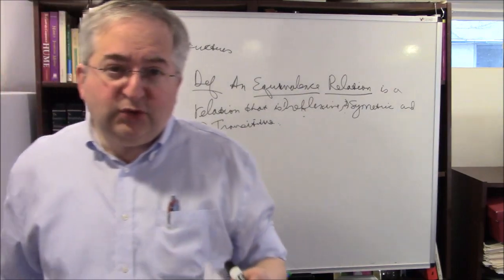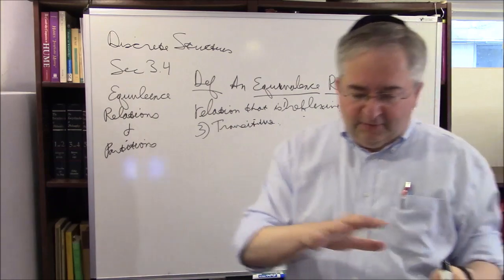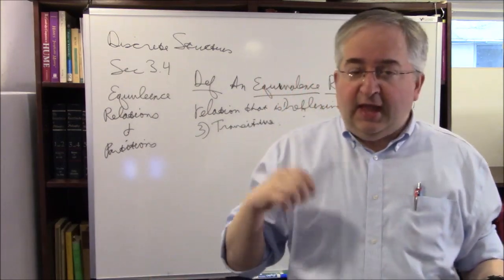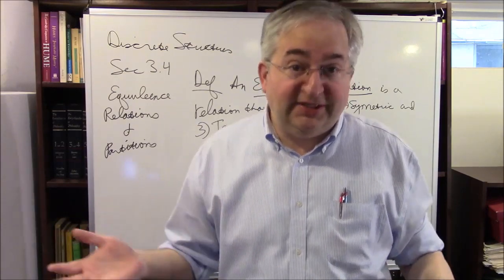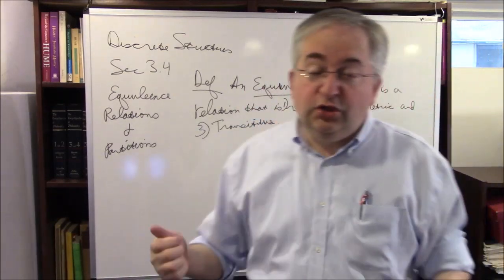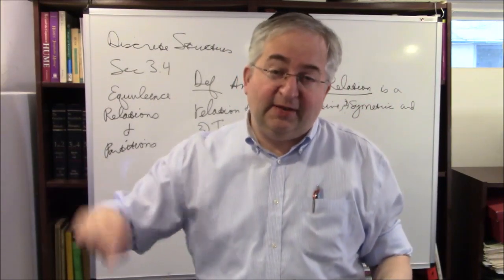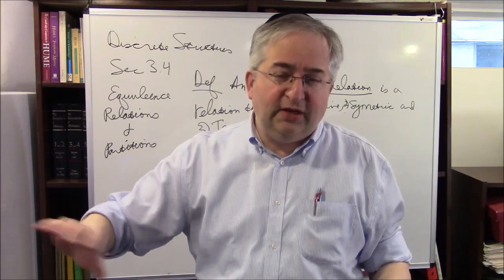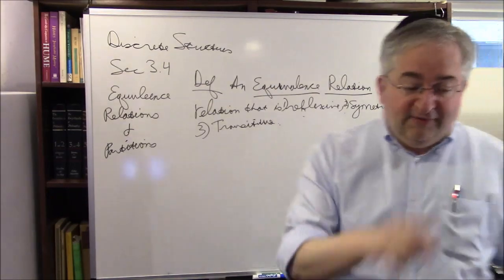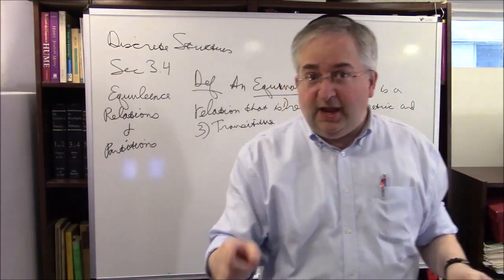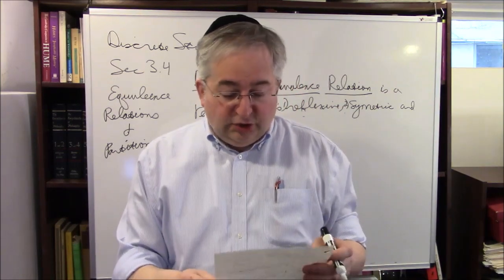It's a way of talking about two things being essentially the same. If you have a set of things and want to say something is essentially the same: everything is essentially the same as itself — that's reflexive. If something is essentially the same as that, then that is essentially the same as this — that's symmetric. And if A is essentially the same as B, and B is essentially the same as C, then A is essentially the same as C — that's transitive.